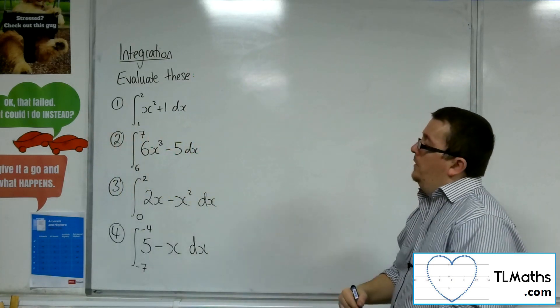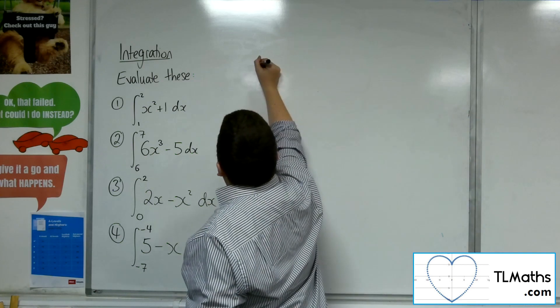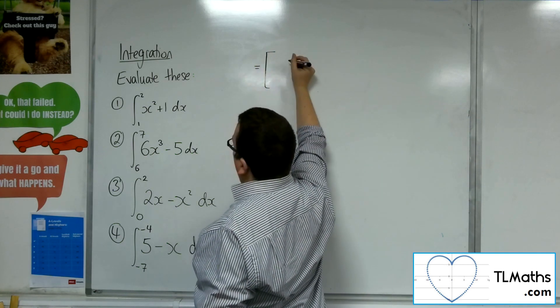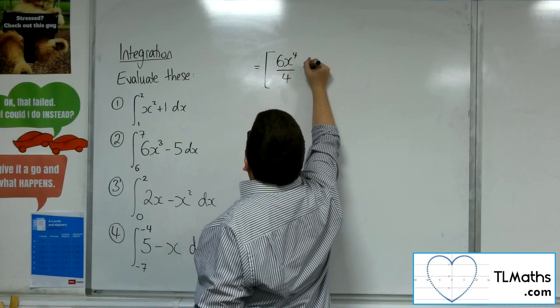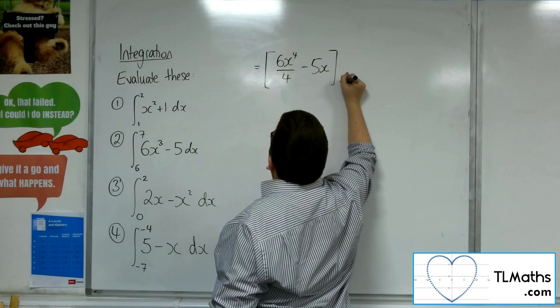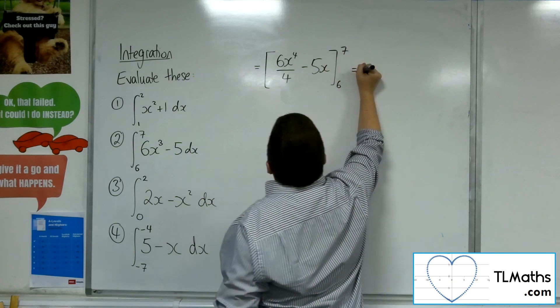Let's have a look at number 2. So our next line of working, square brackets. Add 1 to the power, divide by the new power, take away 5 lots of x, evaluated between 6 and 7.